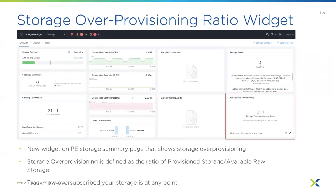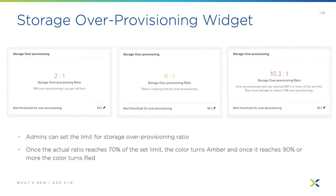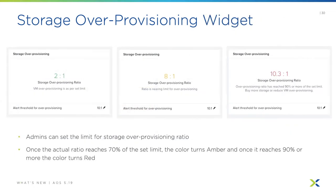There are also enhancements to the storage over-provisioning widget in Prism Element. When you log in, you'll see the storage over-provisioning widget on the right-hand side. The administrator can configure the limit of the storage over-provisioning ratio. Once the actual ratio reaches 70% of the set limit, the color turns amber; once it reaches 90% or more, the color turns red — making it easy to identify over-provisioned storage at a glance.